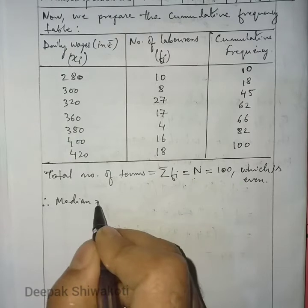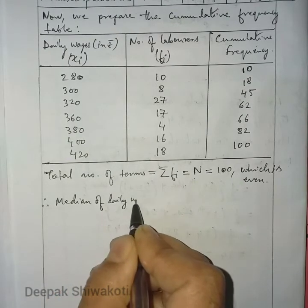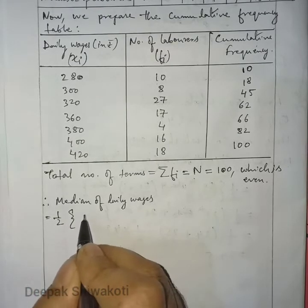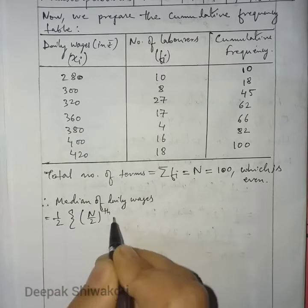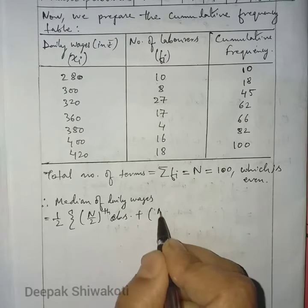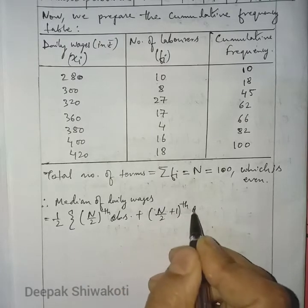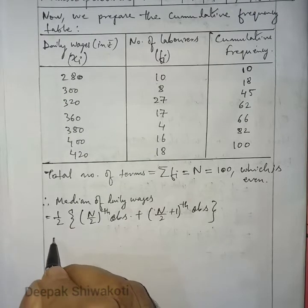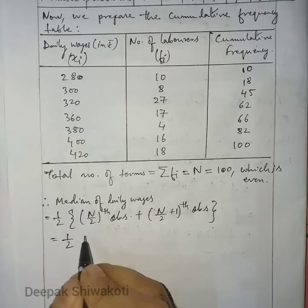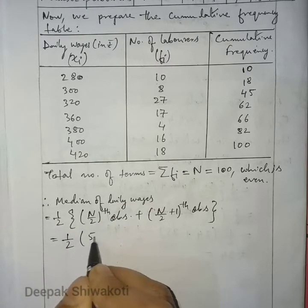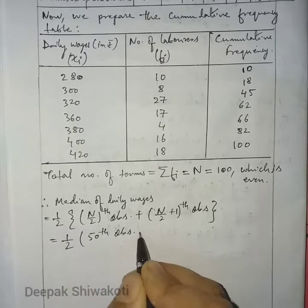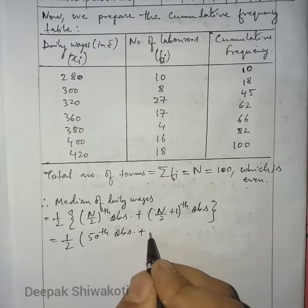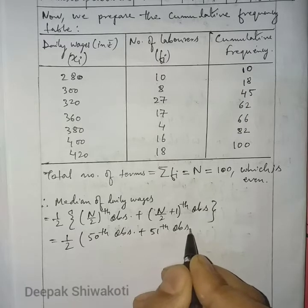The median of daily wages is given by: half of (N/2 th observation + (N/2 + 1)th observation). Here N is 100, so N/2 is 50. We need the 50th observation and the 51st observation.